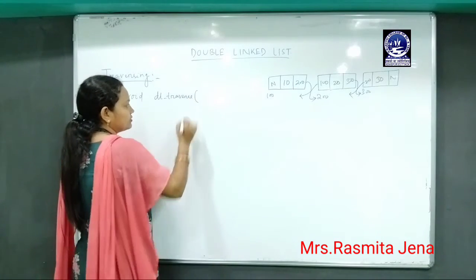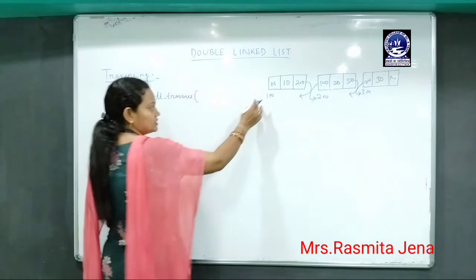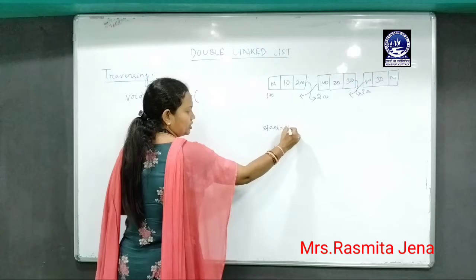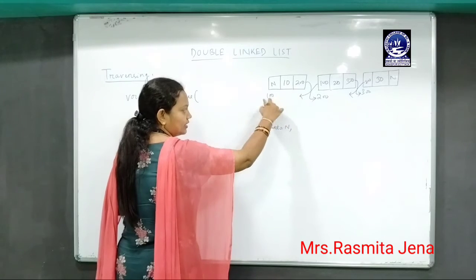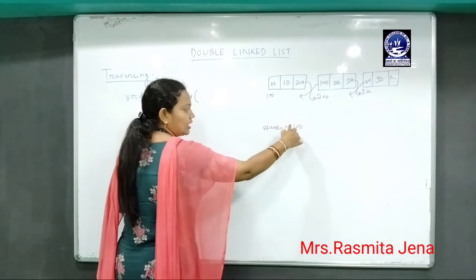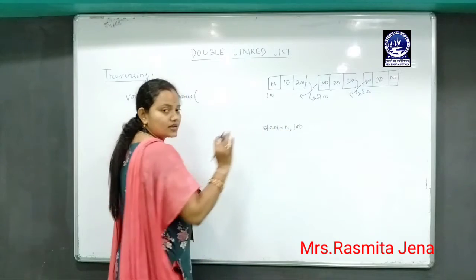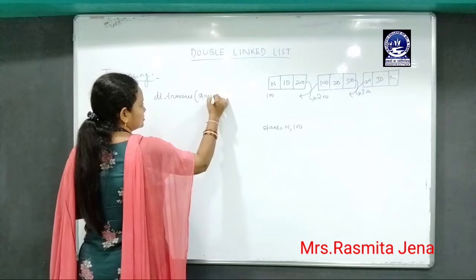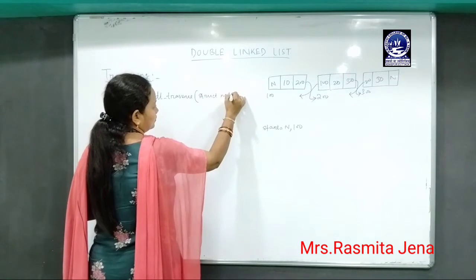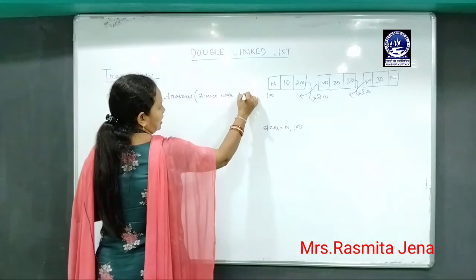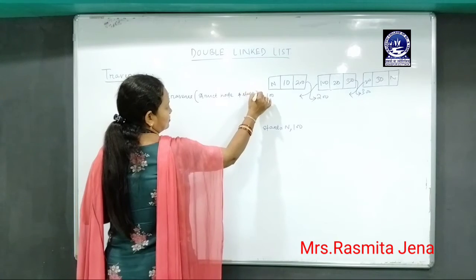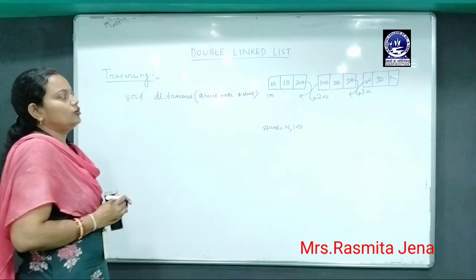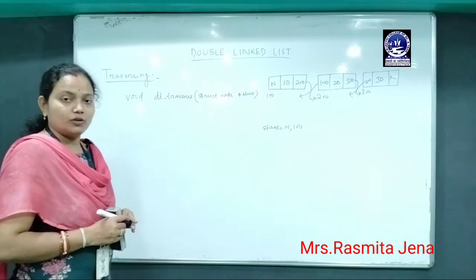We are receiving the start node address, which means we must have a pointer called start. Initially it will be null, and when the nodes are created it will be initialized to 100, because the start node address is 100. It will be received by a struct node pointer called start. This is the function definition for traversing the double linked list.